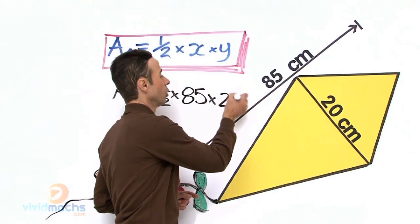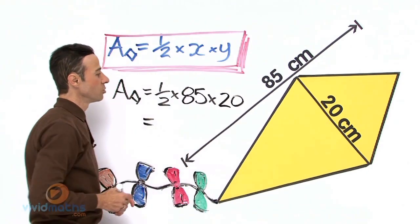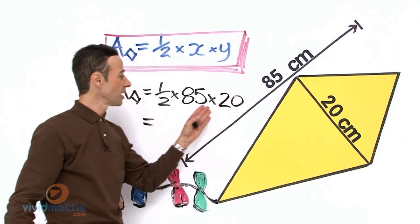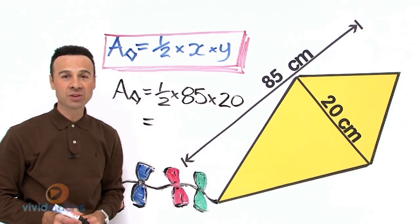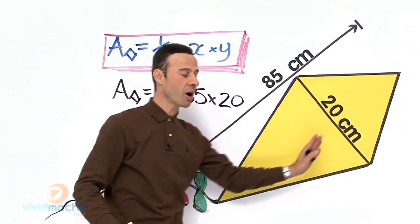All we need to do now is multiply that out. One-half times 20 is 10; 10 times 85 equals 850 - the total area of this vivid yellow kite.